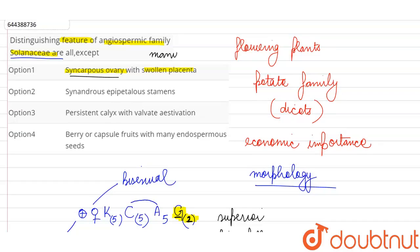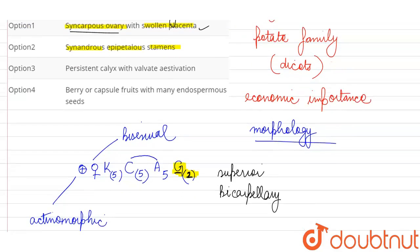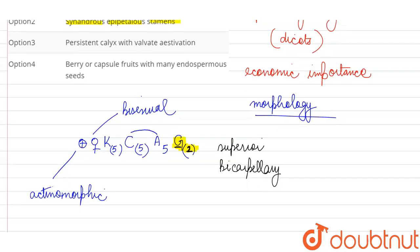Swollen placenta and many ovules in this placenta, this is characteristic feature of angiosperm family Solanaceae. They are saying synandrous epipetalous stamens, so this is incorrect because these stamens are epipetalous, they are connected to the corolla, that is right.